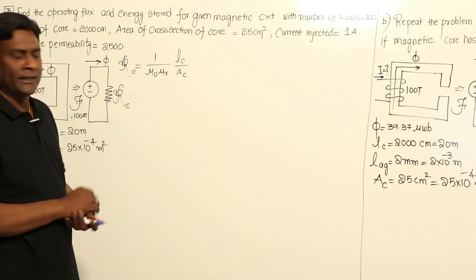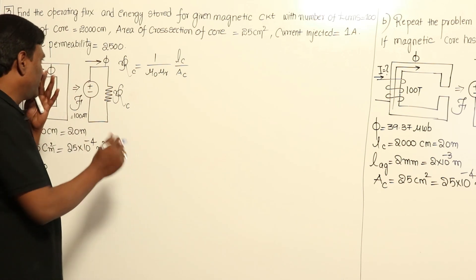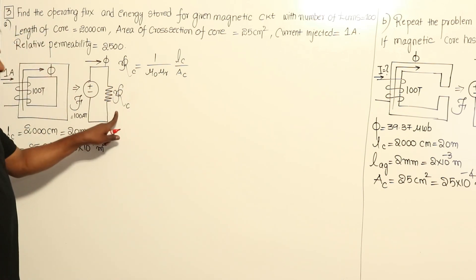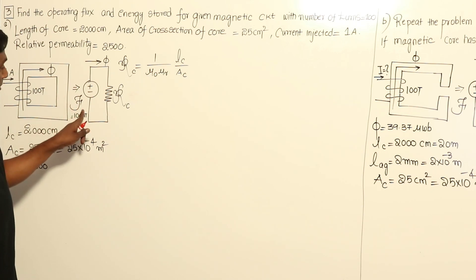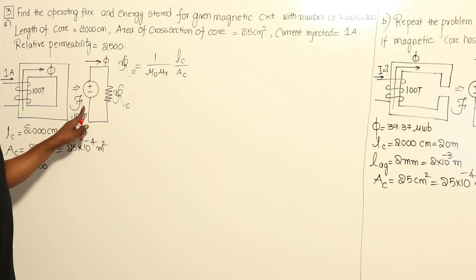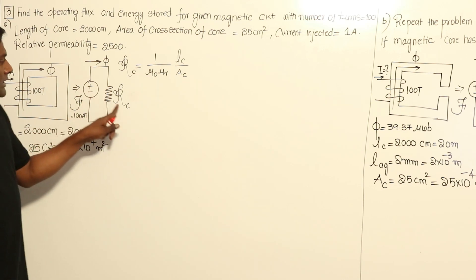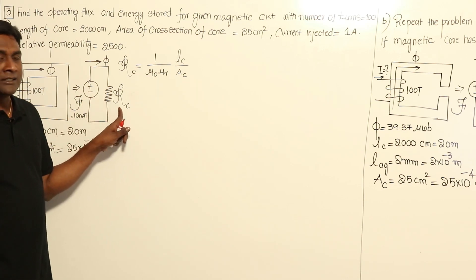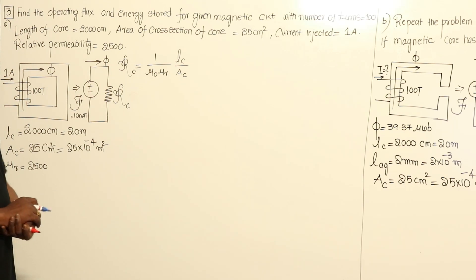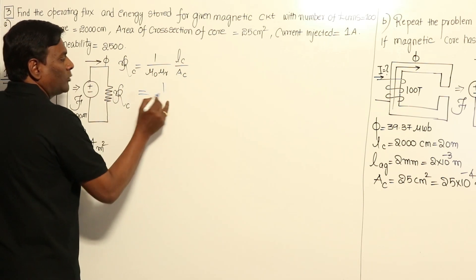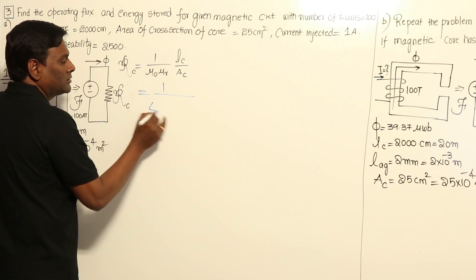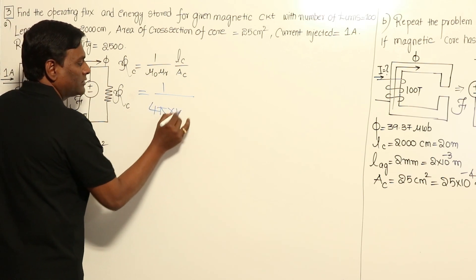Now let me calculate reluctance. They have given 100 number of turns and current is 1 ampere, so MMF = N × I = 100 ampere turns. If I can find the reluctance directly, I can find the flux. So reluctance = 1/(μ₀ × μᵣ) × l/A, where μ₀ for free space is 4π × 10⁻⁷.